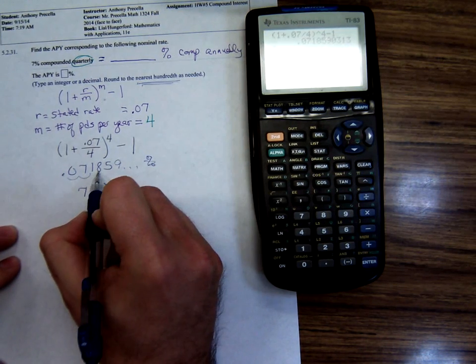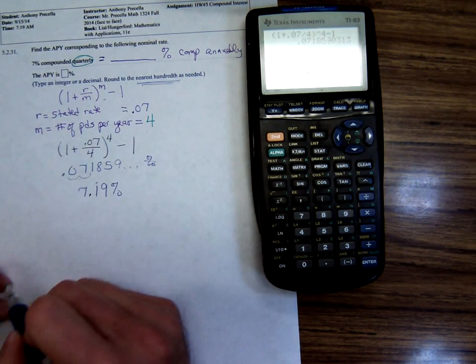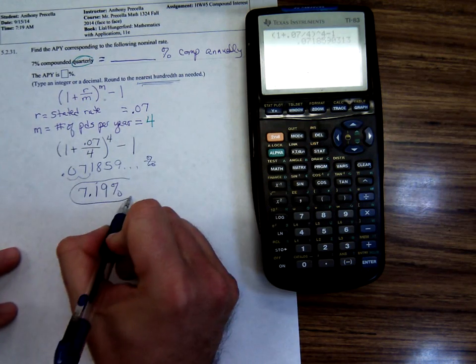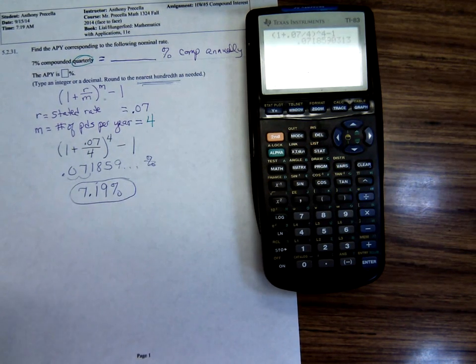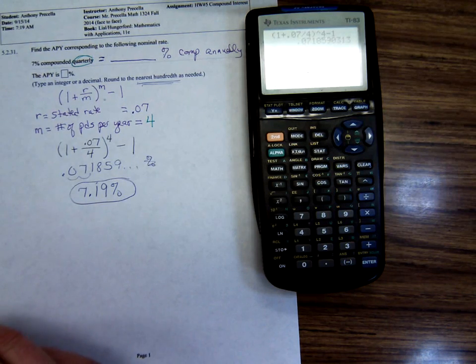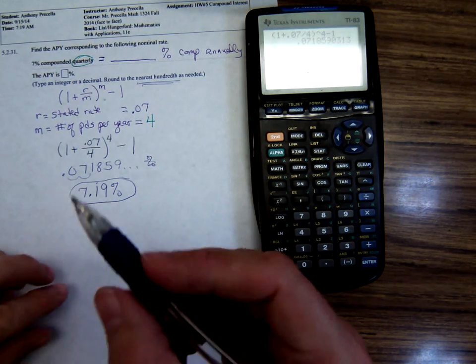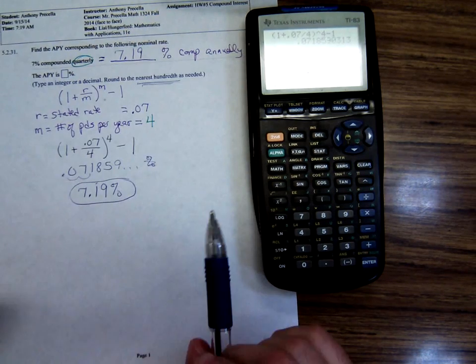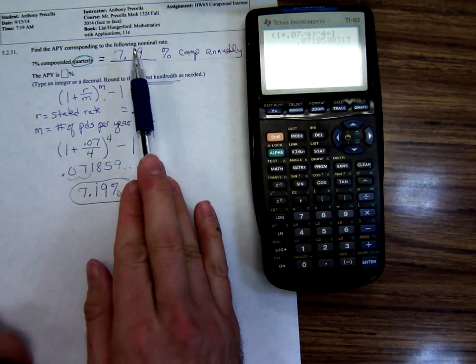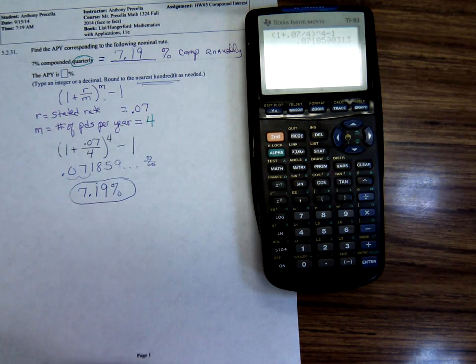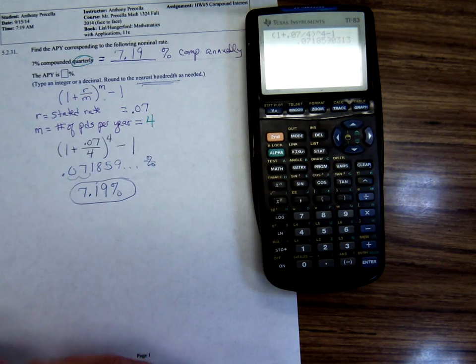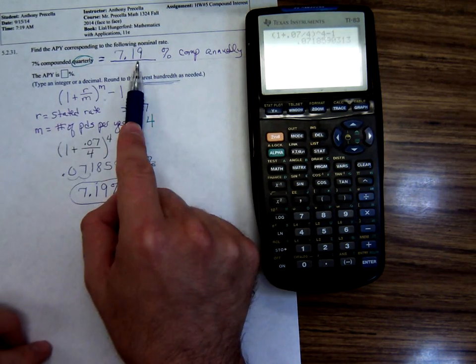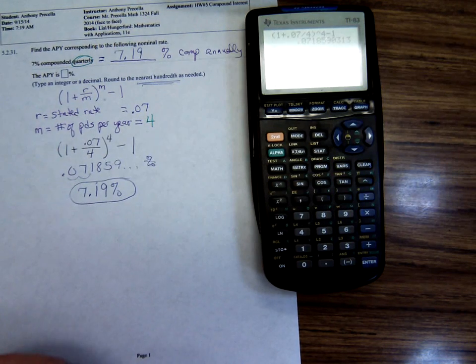That eight, you would round up to a nine because the digit after it is a five or bigger. So 7% compounded quarterly would be the same thing as 7.19% compounded annually. That 7.19 is what's called the annual percentage yield. It's a way of converting and comparing inter-periodic compounding interest rates.